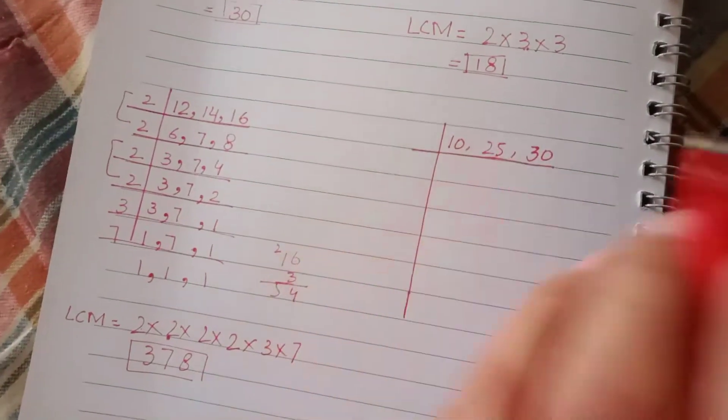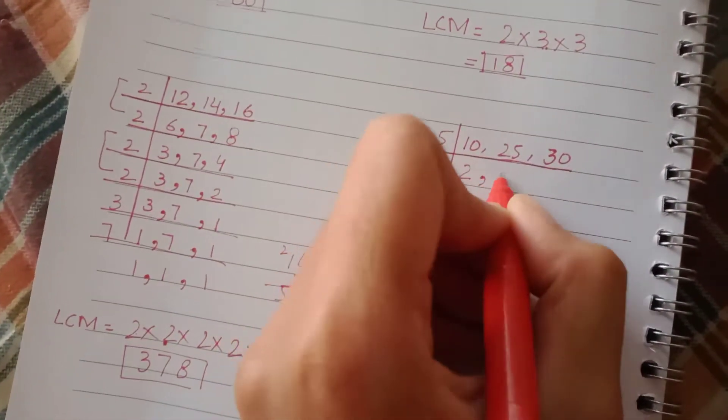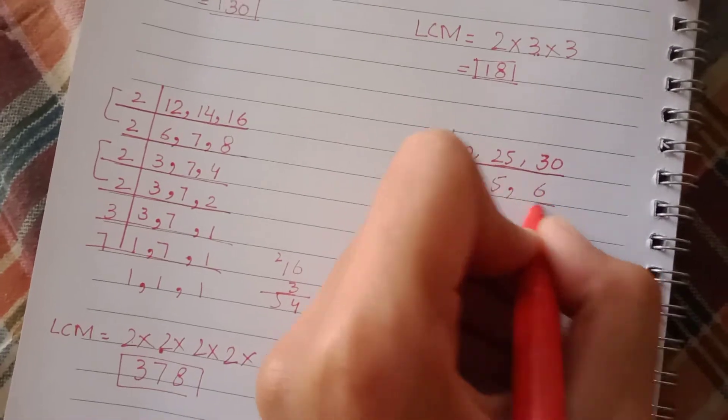Students, you know these three numbers, 5 divides all of them. So first let's take 5: 5 divides 10, 5 divides 25, and 5 divides 30.